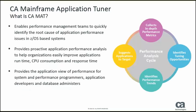What is CA MAT? CA MAT is an application performance sampler. It's going to enable performance management teams to quickly identify the root cause of application performance issues in ZOS-based systems. CA MAT provides proactive application performance analysis to help organizations easily improve application run time, CPU consumption, and response time. CA MAT provides the application view of performance for system and performance programmers, application developers, and database administrators.